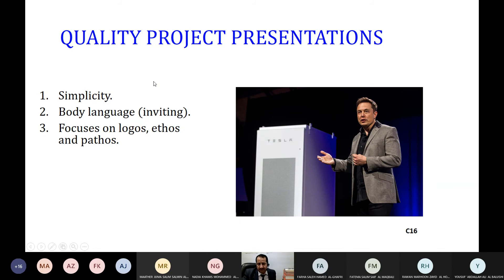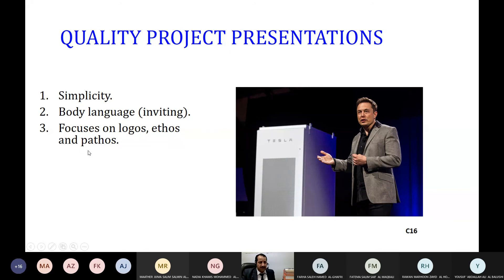Make it simple. Look at Elon Musk's presentation — simplicity. You don't need to put heavy backgrounds on your slides. Make them as simple as you can, focusing on the point you are working on. Body language is important again. Focus on logos — the logic and knowledge in your work; ethos — your capability, skills, and experience in how you attract; and pathos — the emotion of the audience. Use your experience, skills, and character to express the information, the logic, the science, the engineering and technical aspects, to attract their emotion so they can follow and understand what you want to talk about.